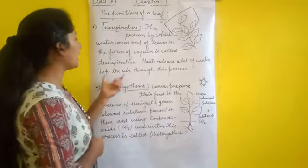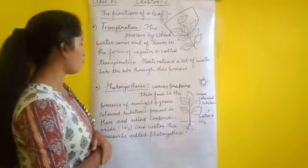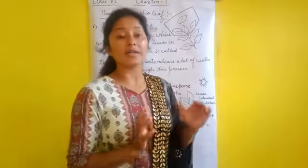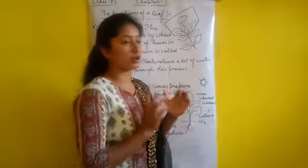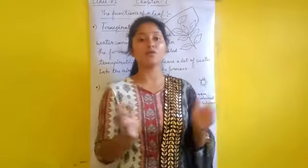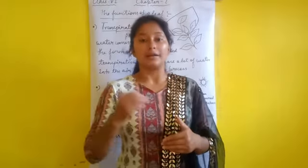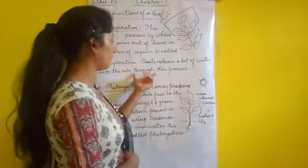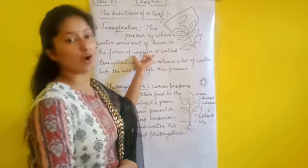The plants release a lot of water into the air in the form of vapour through this process. Water droplets in vapour form are released into the air. This is one of the functions of a leaf — water droplets come out from the leaves in the form of vapour.